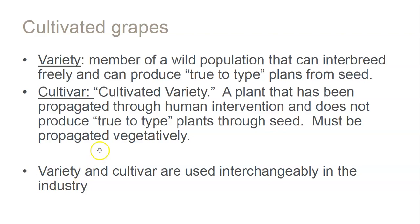We've already talked about this before, but remember, variety is the member of the wild population. It can't interbreed freely. It's true to type when you plant it from seed. These are the technical terms. And a cultivar is a cultivated variety. It's not true to type when you plant it from seed. So when you go out and get a Pinot Noir seed and put it in the ground, you will not get a Pinot Noir grape.